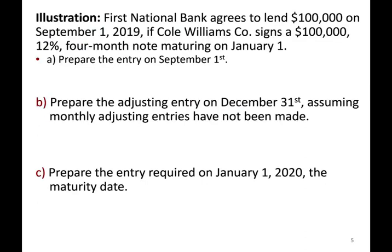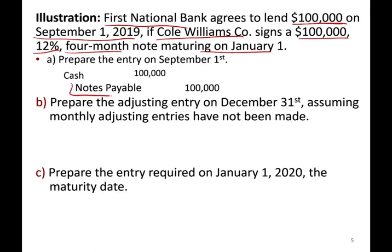Let's take a look at some entries to see how it works. First National Bank agrees to lend $100,000 on September 1st, 2019, if Cole Williams Company signs a $100,000, 12%, four-month note maturing January 1st. Cole Williams wants to borrow $100,000 on September 1st and will pay it back January 1st. When we borrow the money, Williams debits cash and credits notes payable — we just created a liability called notes payable of $100,000.